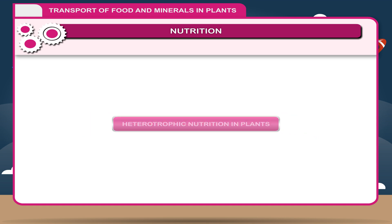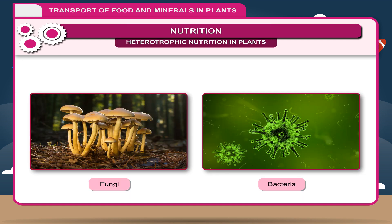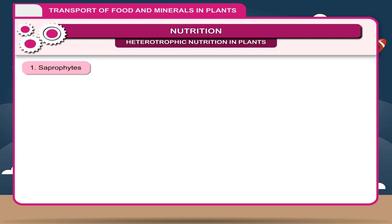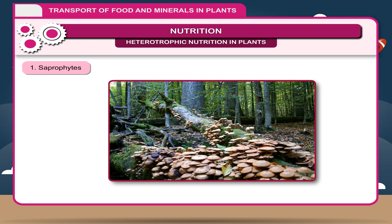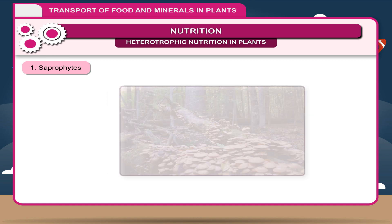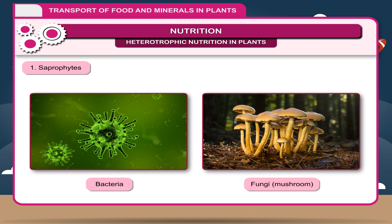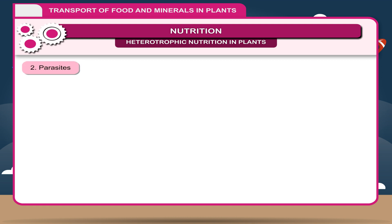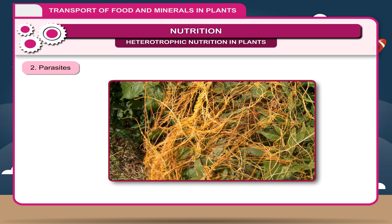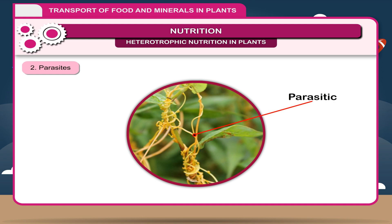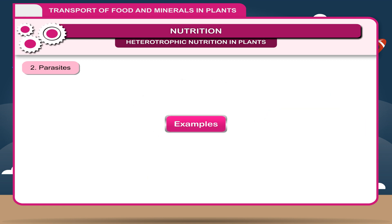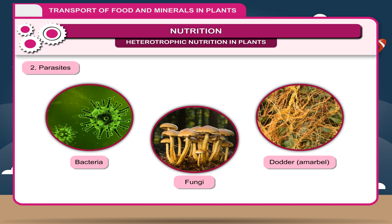Heterotrophic nutrition in plants: There are plants like fungi and bacteria which do not possess chlorophyll and therefore cannot prepare their own food. Heterotrophic nutrition in plants can be of the following types. 1. Saprophytes: Plants which depend upon dead, decayed and rotten materials for their nutrition. Example: some bacteria and fungi, mushroom. 2. Parasites: Plants which depend upon other living organisms (plants or animals) and take ready-made food from them. The plant taking such food is called a parasite and the organism from which food is taken is called the host. Examples: some bacteria, fungi, dodder, amarbel, etc.